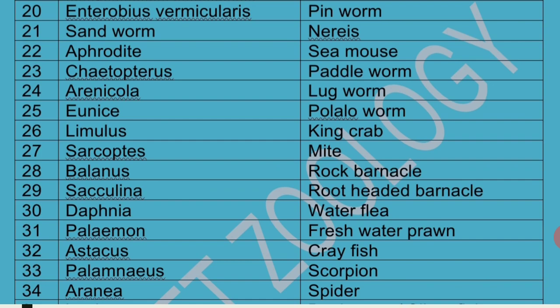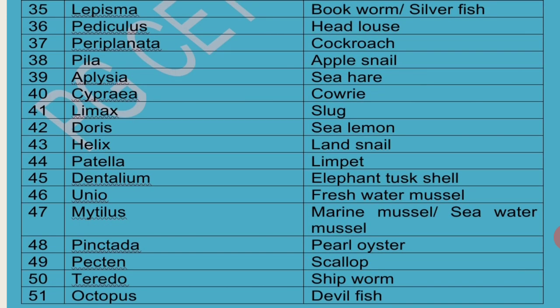Palaemon is called Freshwater Prawn. Astacus is called Crayfish. Palamnaeus is the scientific name of Scorpion. Aranea is the scientific name of Spider. Lepisma is present in books, hence it is called Bookworm. Its color is silverish white so it is also called Silverfish, but it is not a fish — it is an insect.